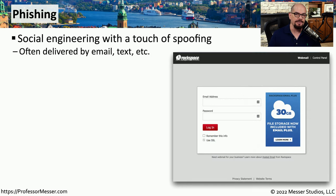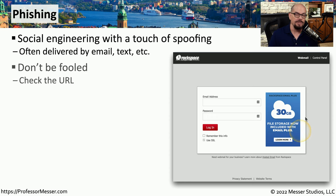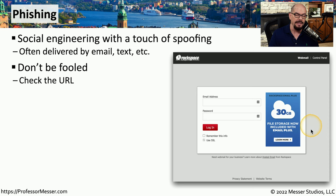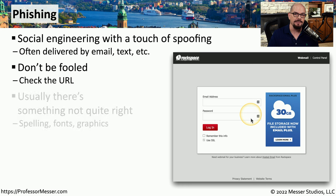Phishing is a type of social engineering that includes a bit of spoofing. The attacker performing this phishing attack is often imitating or pretending to be someone you know. For example, you might get a link that opens a window to your online email system, but in reality this is not your email system — it's a third-party website. When you type in your email address and password, you're effectively sending that to the attacker.